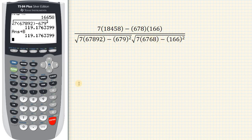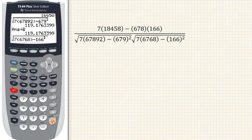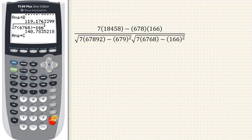And then let's do the same thing for this one. So I've got 2nd square root, and I've got 7, parenthesis, 6, 7, 6, 8, close parenthesis, minus 166 squared, and hit enter. And then I'm going to store this, so hit STO, and then alpha, and I'm going to store this in memory slot C. See the letters there? So I hit C and enter.